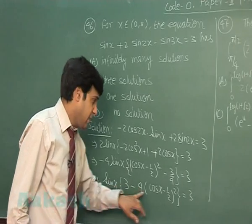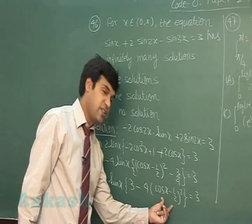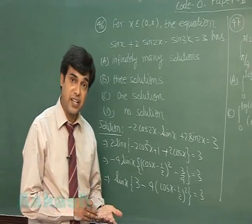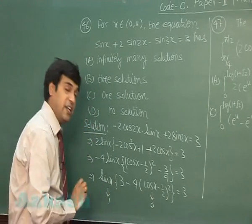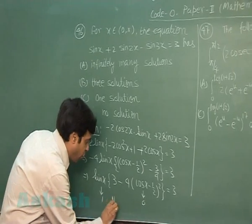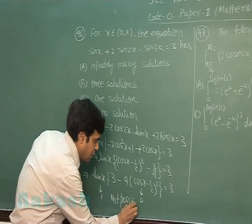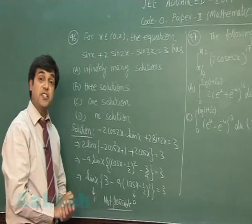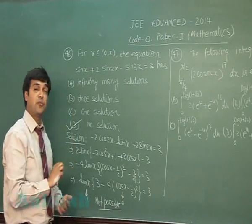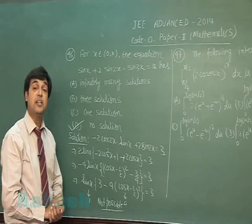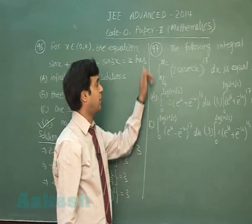We can clearly see this equation can have a solution only if sinx = 1 and [3 − 4(cosx − 1/2)²] = 3 simultaneously, which is not possible. The conclusion is that there is no solution of the given equation, so answer D is correct. Let's move to question 47.